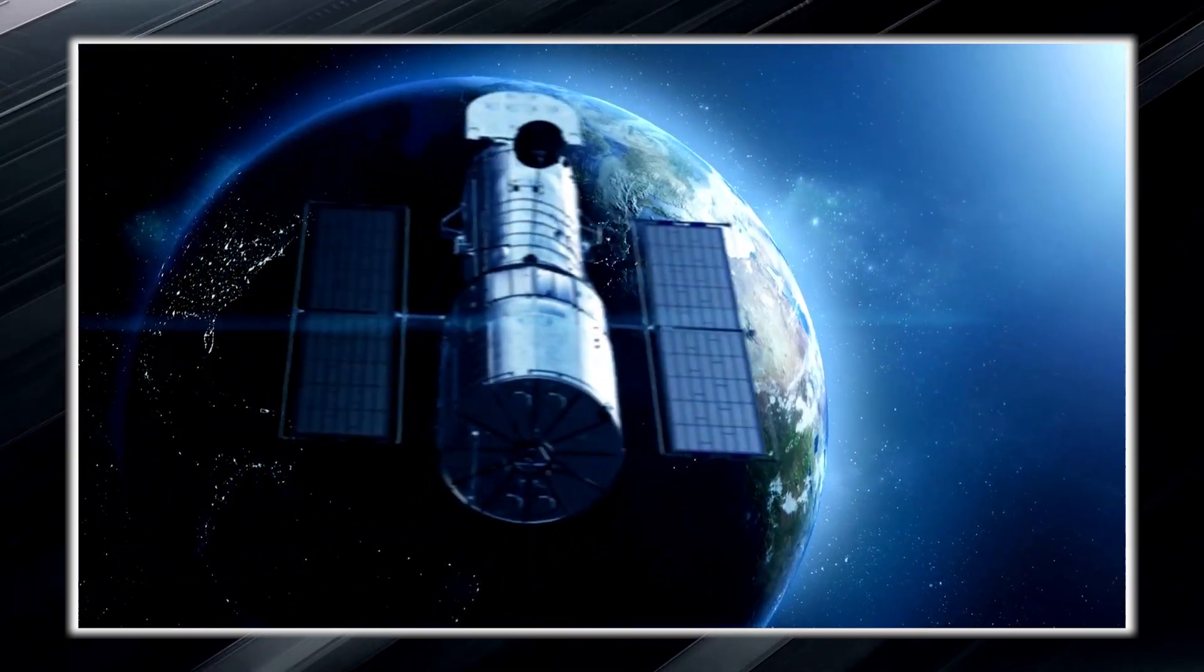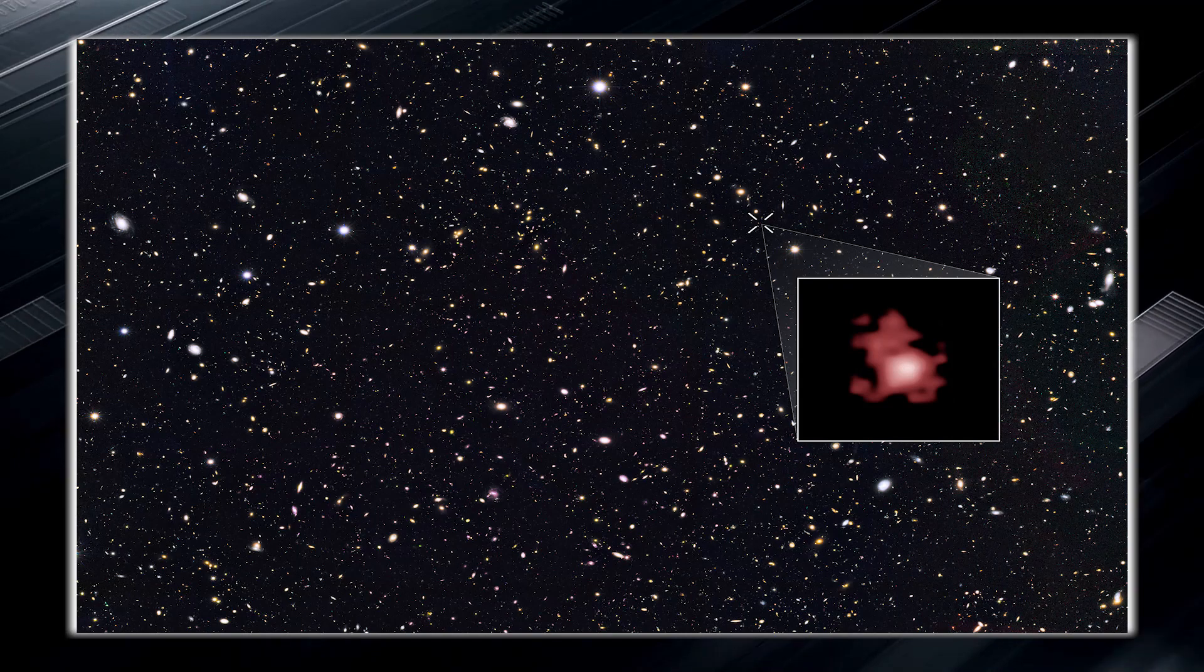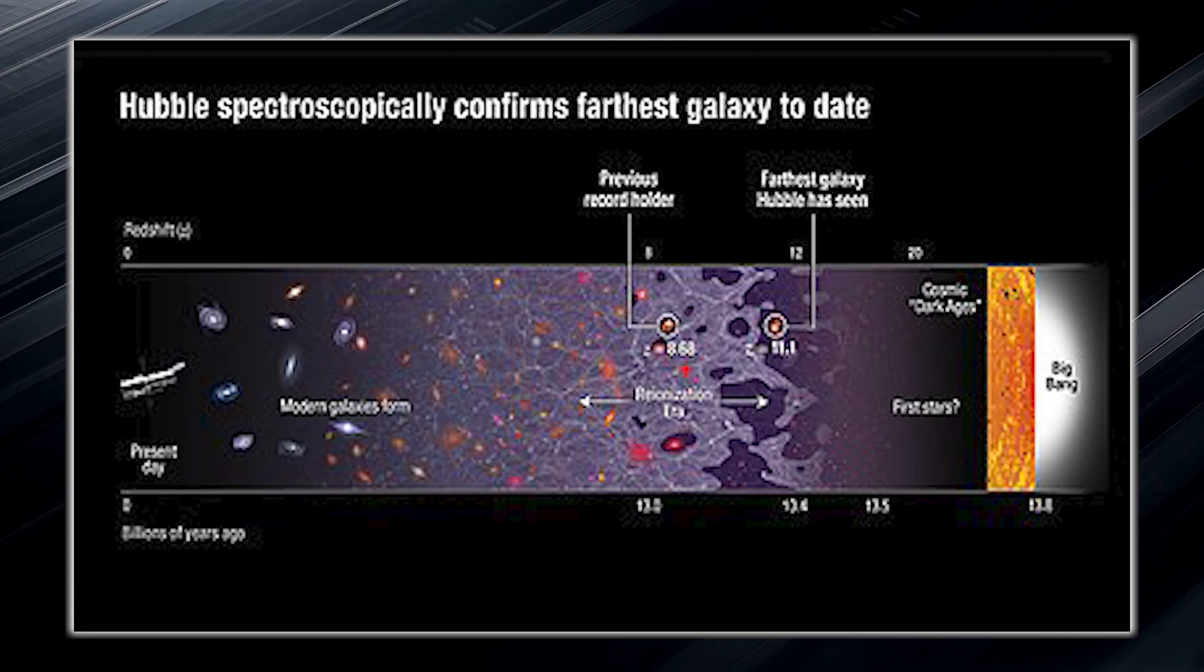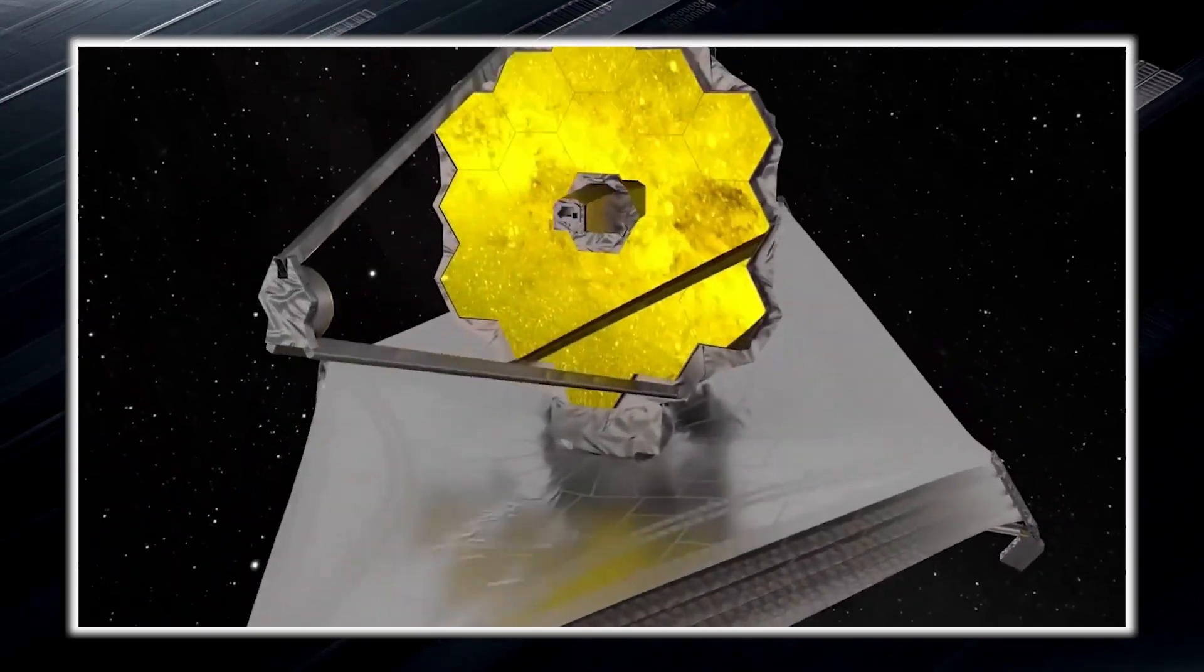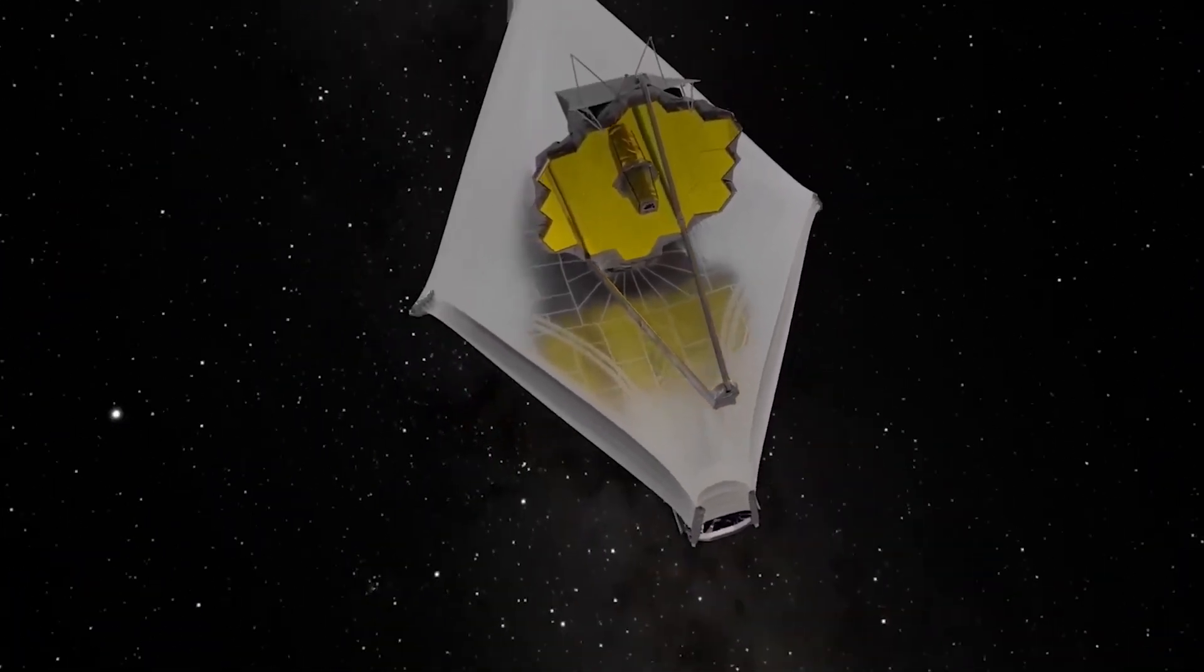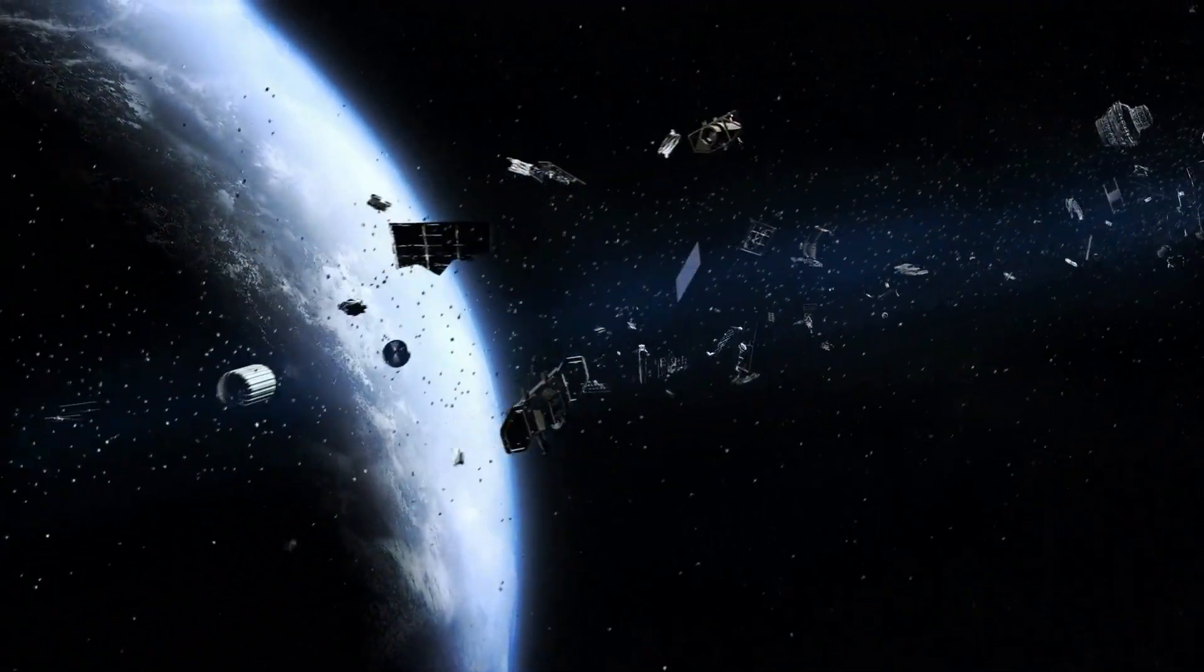Previously, the Hubble Space Telescope had observed the galaxy GN-Z11, which existed just 400 million years after the big bang in 2016. However, thanks to the incredible capabilities of the James Webb, we have been able to see even further into the past, revealing galaxies that existed only 250 million years after the big bang.